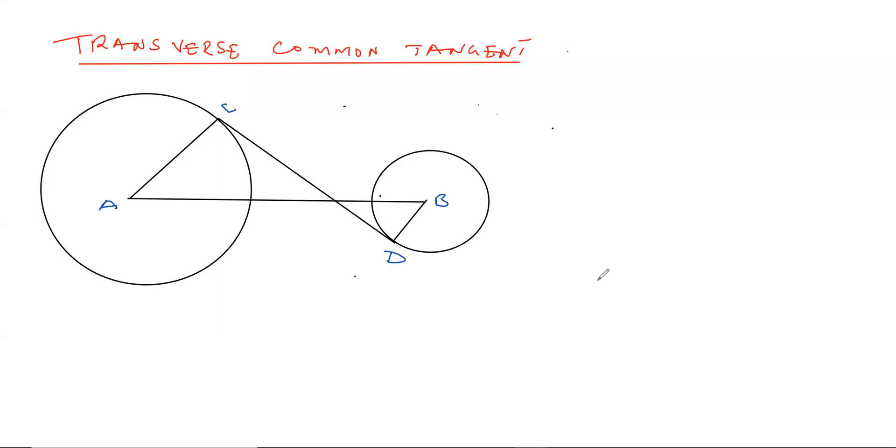As you can see on the board, on the phone, whichever place you're watching from, there are two circles. Unlike the other common tangent, this is different.